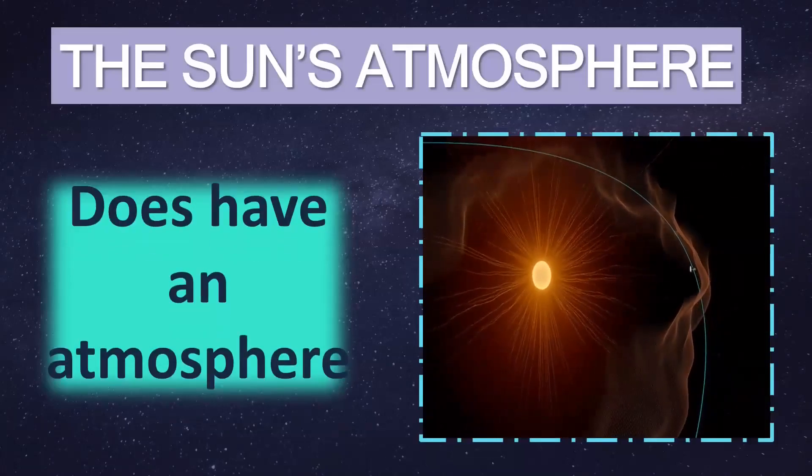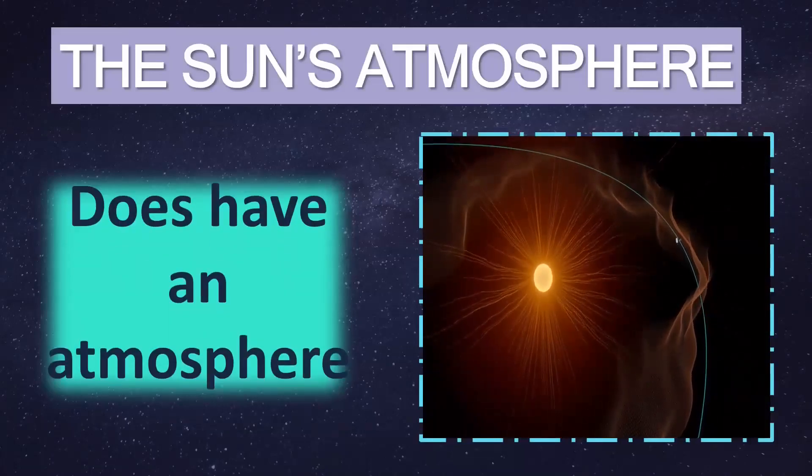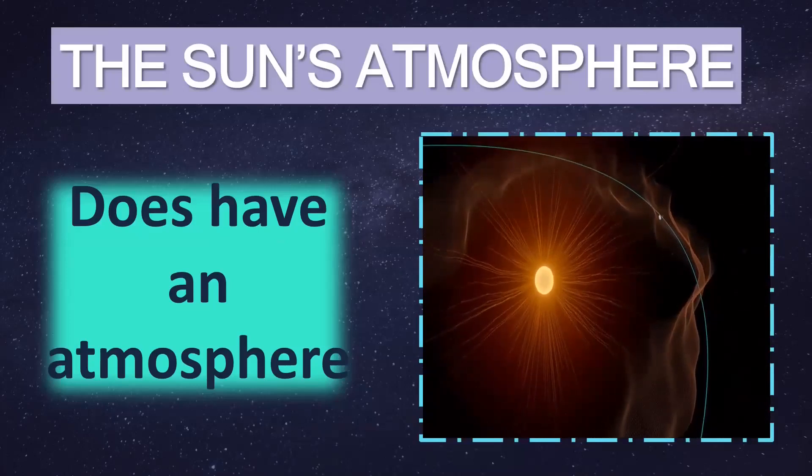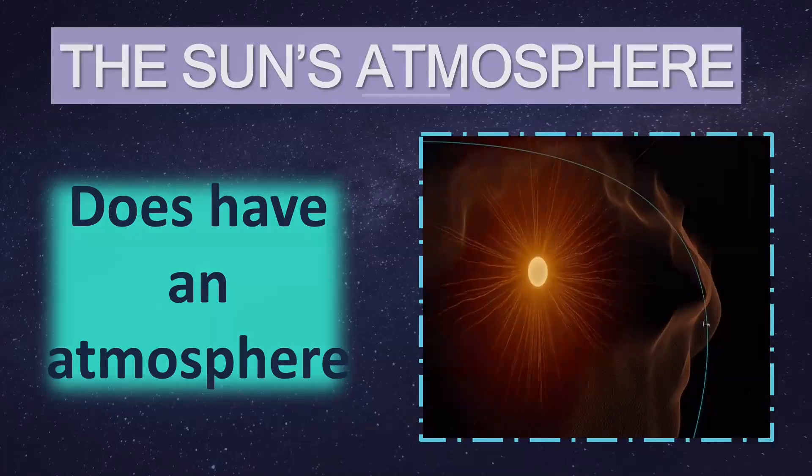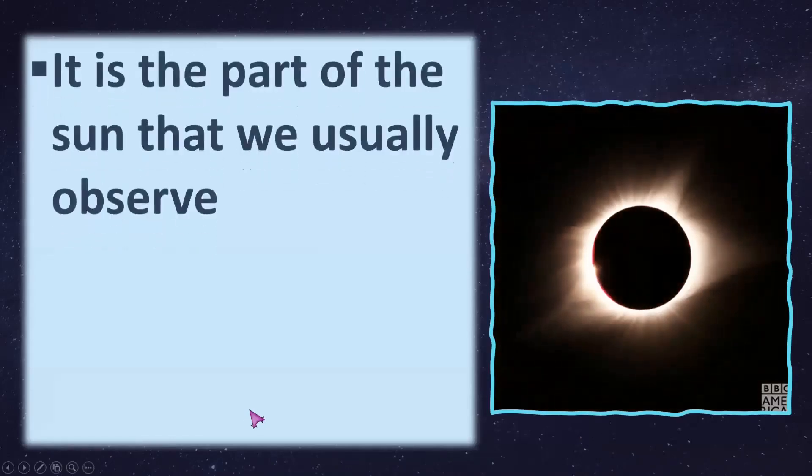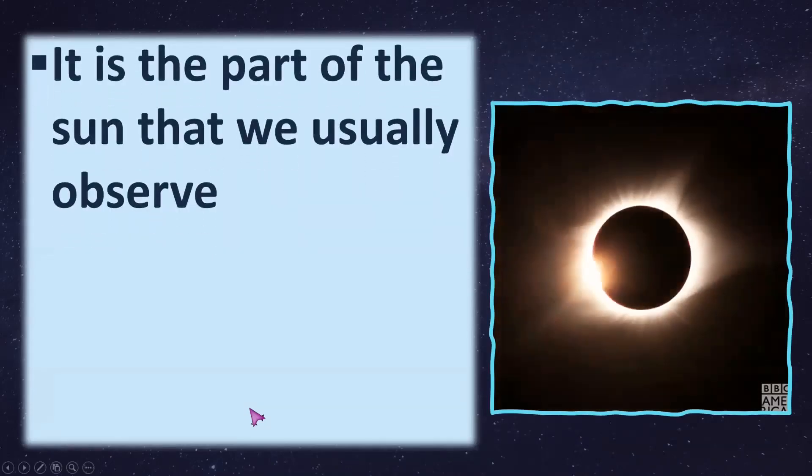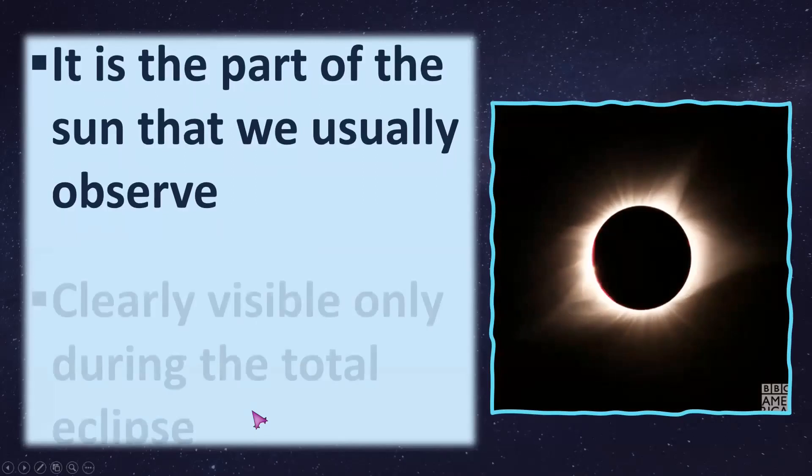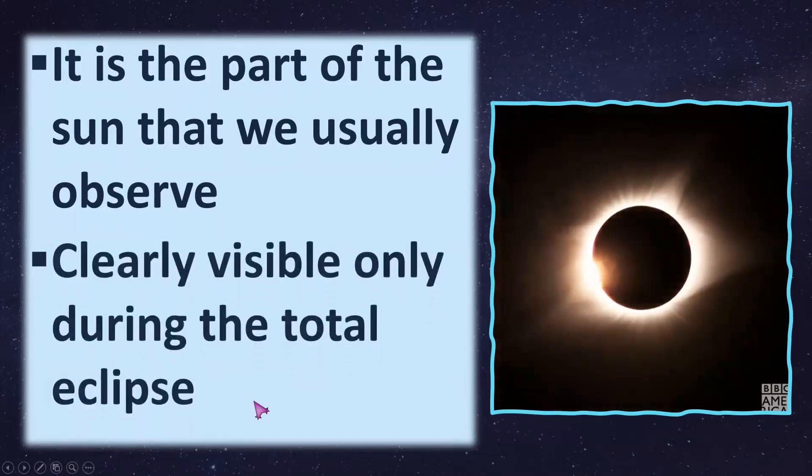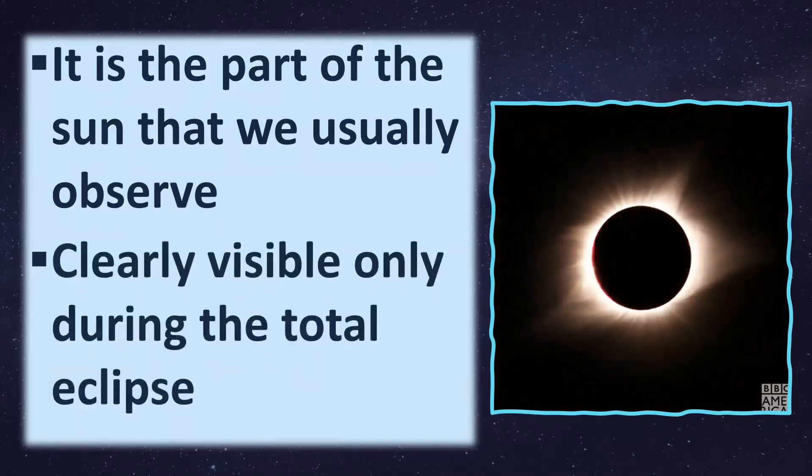When it comes to the sun's atmosphere, yes, the sun has an atmosphere. It is the part of the sun that we usually observe and is clearly visible only during a total eclipse.